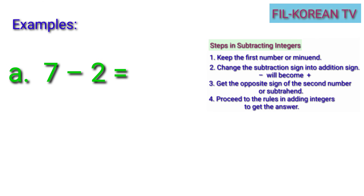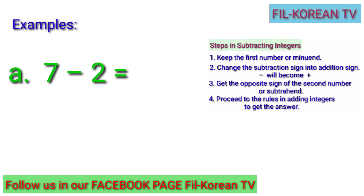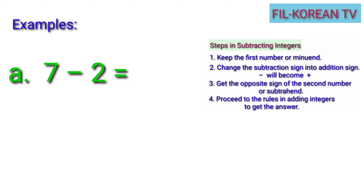Let's follow these steps in subtracting integers. Our first example: positive 7 minus positive 2, or 7 minus 2. It's very easy, so we will just subtract. 7 minus 2 equals 5. In this example, we can get immediately the answer without changing the subtraction sign into addition sign because we only subtract whole numbers or natural numbers.